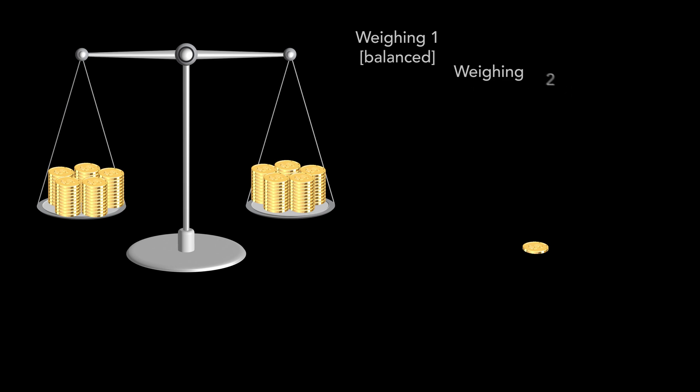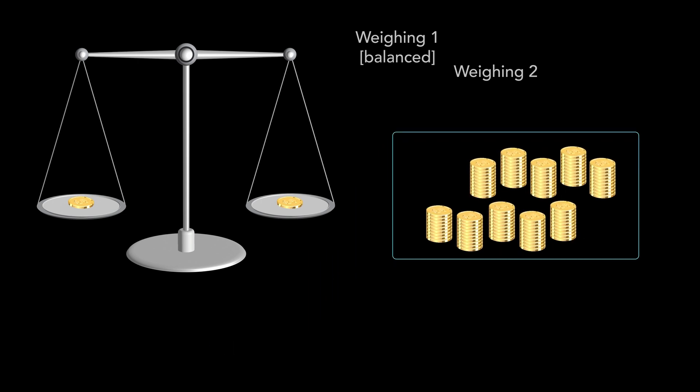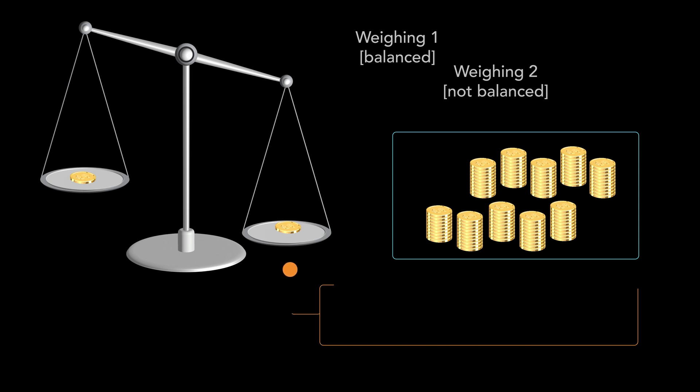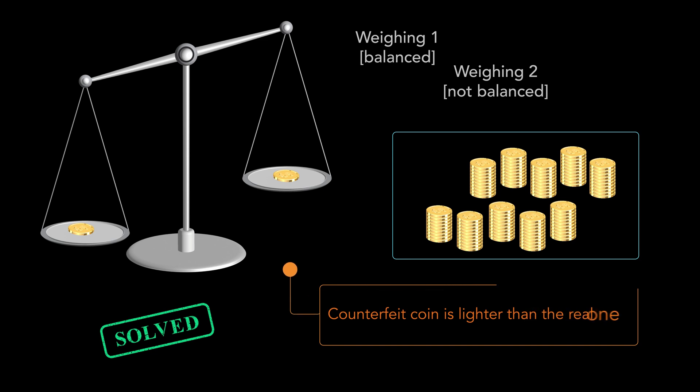In step 2 we compare the weight of the counterfeit coin that was not on the scale before with any other real coin. If the arm of the scale with the counterfeit coin moves down, then the counterfeit coin is heavier than the real one. If the arm of the scale with the real coin moves down, then the counterfeit coin is lighter than the real one.